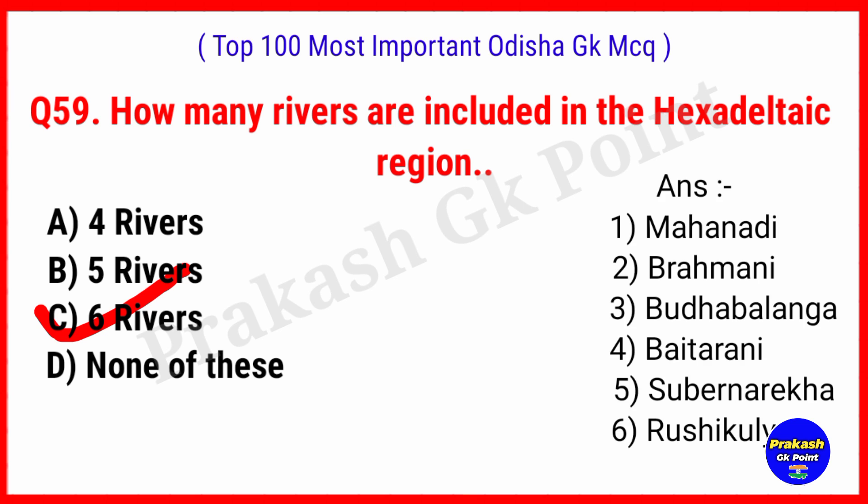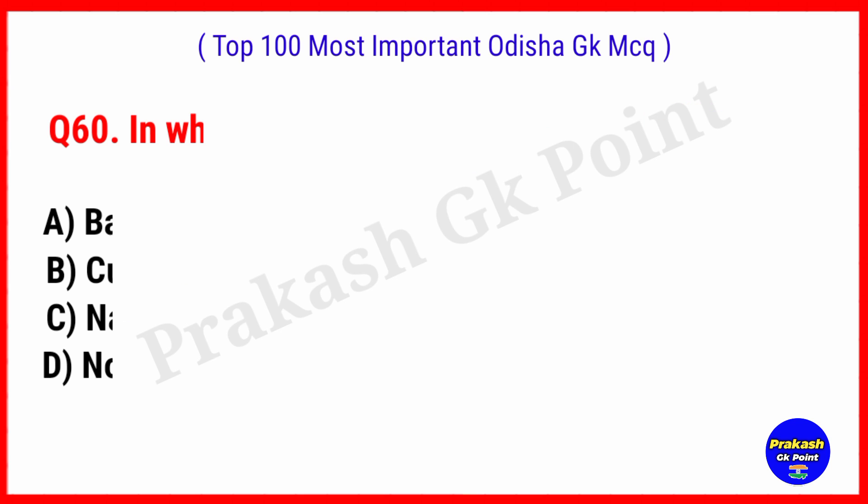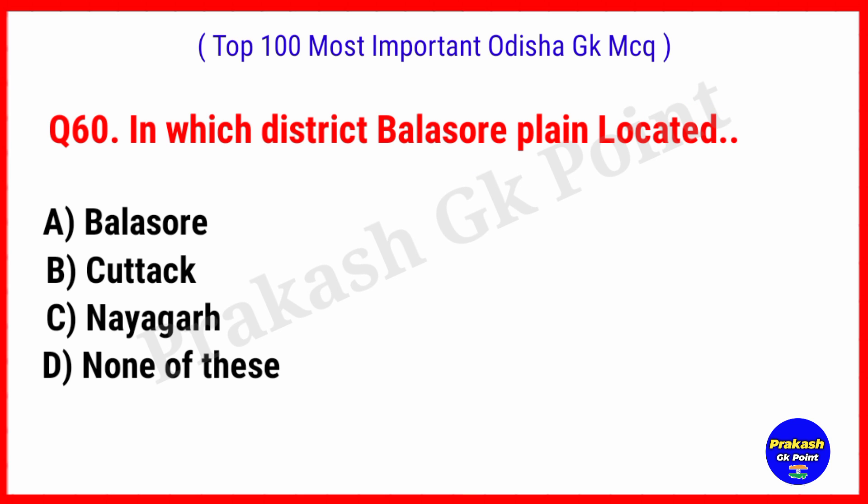The 6 rivers in the Hexadelta-type region are: Mahanadi, Brahmani, Budha Balanga, Vaitarani, Subarnarekha and Rusikulya. In which district is the Balasore plain located? Answer: Option A, Balasore.